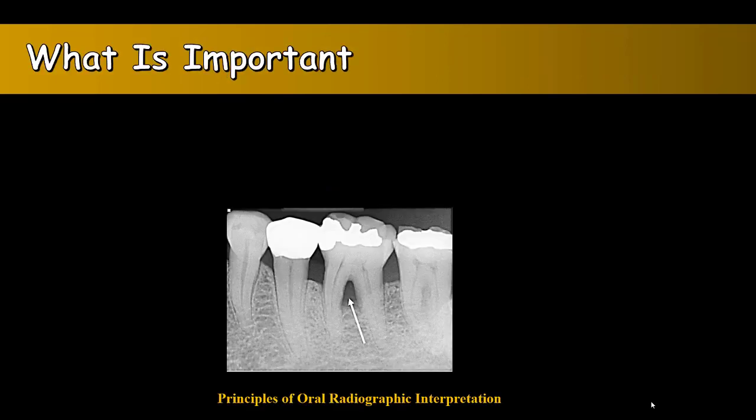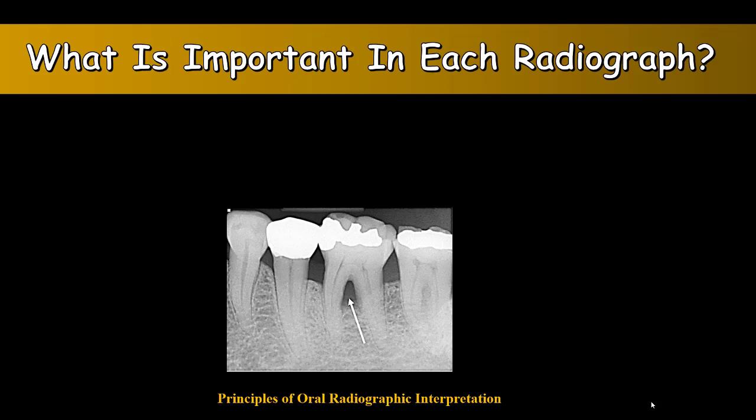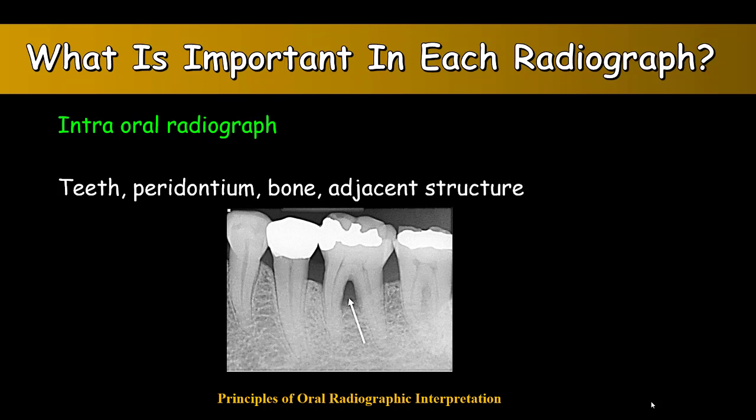What is important in each radiograph? We always should examine the whole radiograph, not just the teeth but anything we see in the radiograph. In an intraoral radiograph, we should look for anything in that radiograph. In a periapical radiography, I have to look at the teeth, the periodontium, the bone structures, adjacent structures, anything that I see in that field of view. I have to look for bone loss, PDL widening, any tooth resorption or bone resorption that I can see in the radiograph.